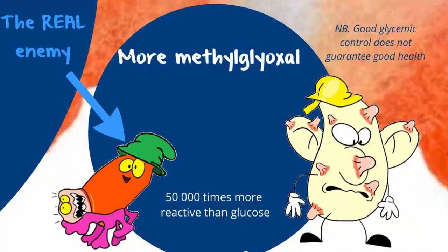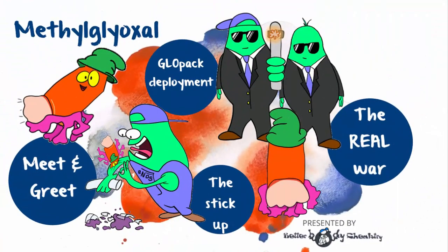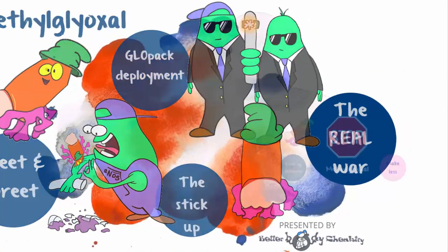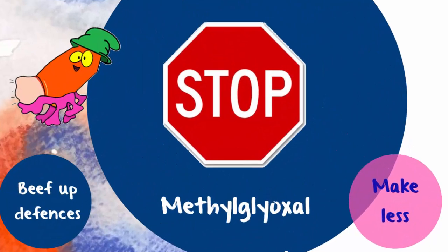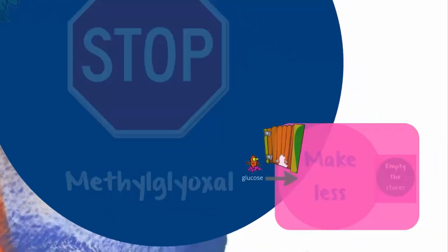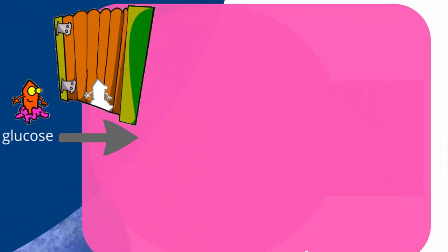So the war should be a war on methylglyoxal. How do you go to war against methylglyoxal? You have two options: make less, and beef up the methylglyoxal defences. First prize: send in less sugar by cutting carbs. It's a no-brainer.